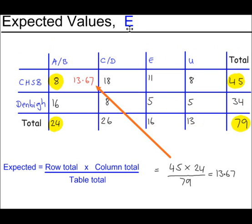The expected values are calculated using this formula. So what we're looking at here is Cholney High School for boys, grades A or B. How many boys did we expect to get grades A or B? And the way to work it out is for this particular figure here, for that 8 there, you work out the row total, which is 45, times the column total for that column there, where that particular number belongs, which is 24. And then you divide by the table total.